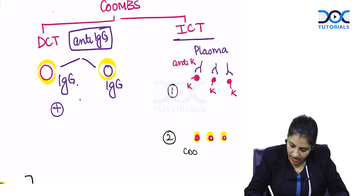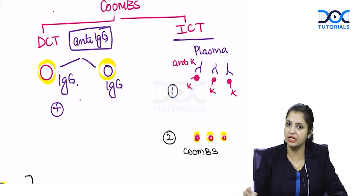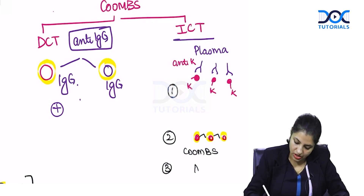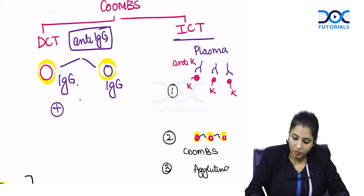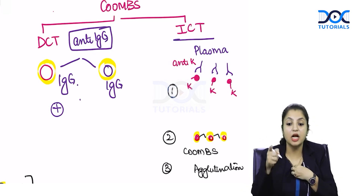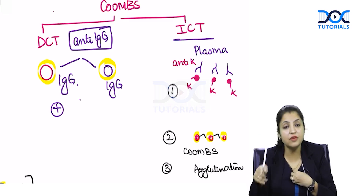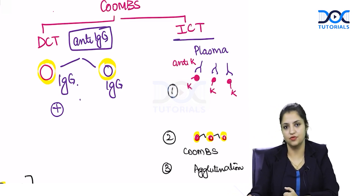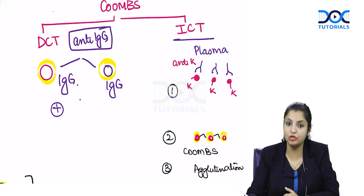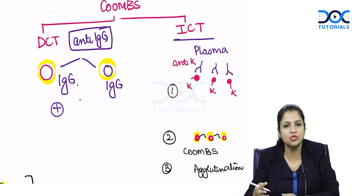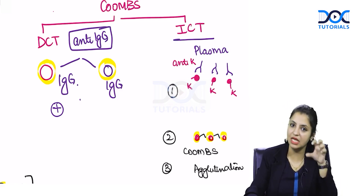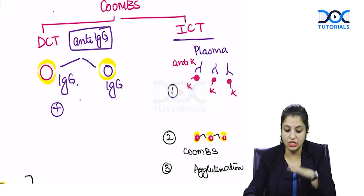After adding the cells, we add Coombs antiserum — that is anti-IgG and C3d. As soon as you add Coombs antiserum, these cells bind together and the third step is agglutination. That means my body has Kell antigen, the blood bag has anti-Kell antibody, and if you give this blood bag to me I am going to get a transfusion reaction. This is usually a delayed hemolytic transfusion reaction because it is an IgG antibody — patient will present with jaundice after 3 to 7 days of transfusion.